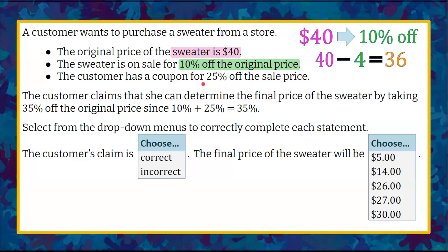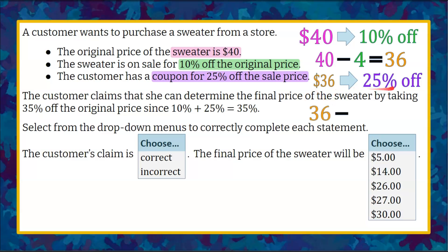Now that's our sales price. The third condition says we have a coupon for 25% off that sales price. So we take our sales price of $36 and subtract 25% of 36. Written as a fraction, 25% is one-fourth — four quarters in a dollar. One-fourth of 36 is 9. So our 25% off coupon gives us $9 off the sales price, not the original price. 36 minus 9 is $27, so our final cost for the sweater is $27.